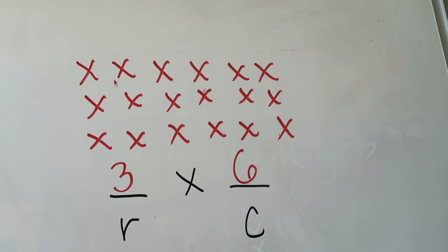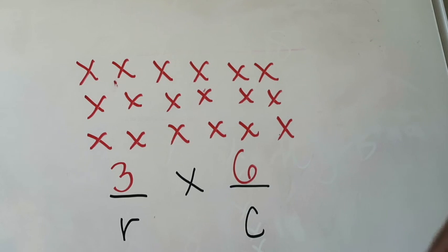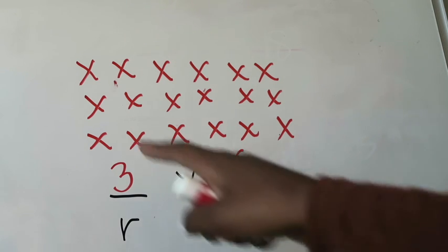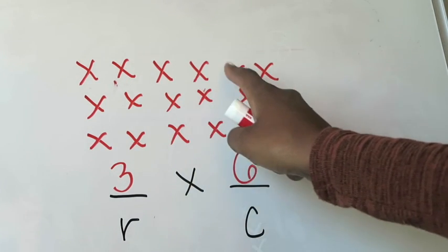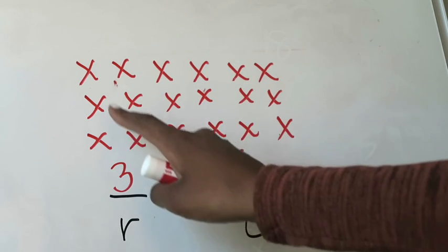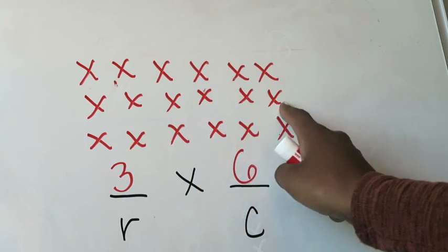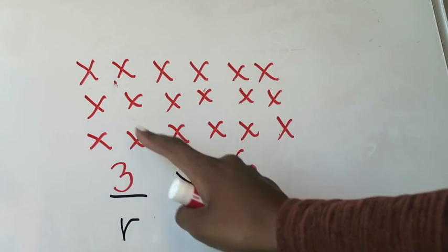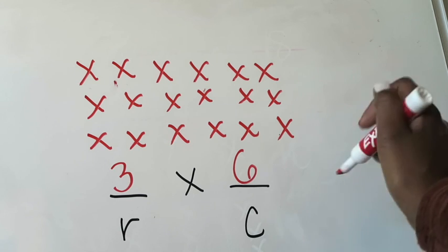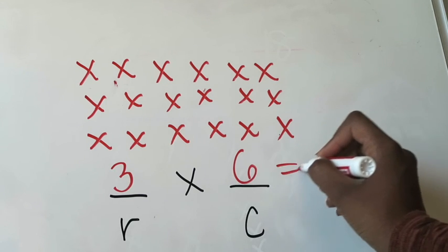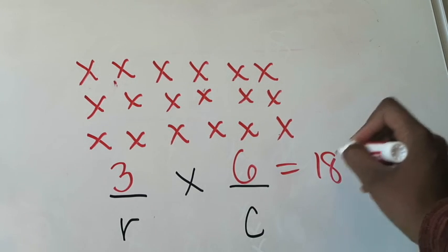That tells me the multiplication sentence for this array is three times six. Then, same as before, if I want to figure out the product I count all of my pieces: one, two, three, four, five, six, seven, eight, nine, ten, eleven, twelve, thirteen, fourteen, fifteen, sixteen, seventeen, eighteen. So I have a total of 18.